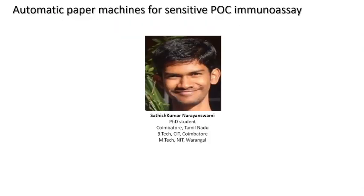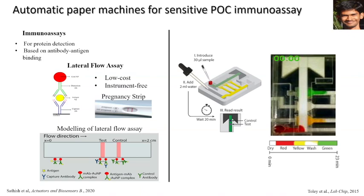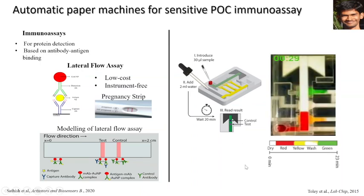Satish is also a senior PhD student working on automatic paper machines for sensitive point-of-care immunoassays. Immunoassays are used for protein detection based on antibody-antigen binding. He has also developed a model to understand reaction kinetics in lateral flow assays. Apart from this, Satish has developed a device for sequential delivery of different reagents. This is a short video to demonstrate sequential delivery of three different dyes—red, yellow, and green—to the detection zone where the detection happens.